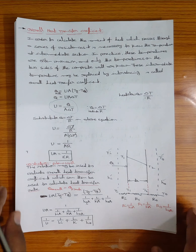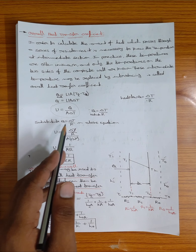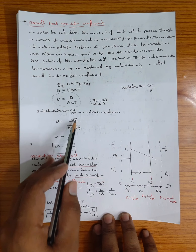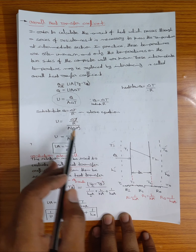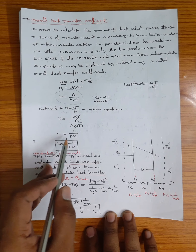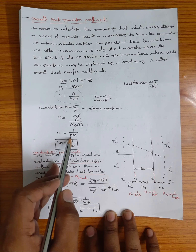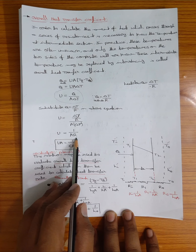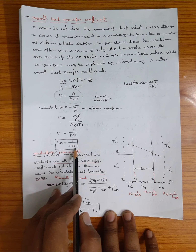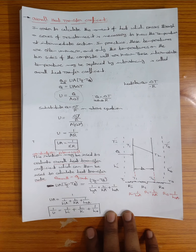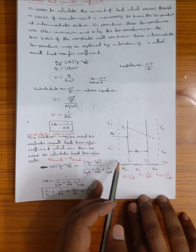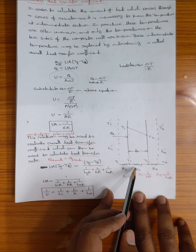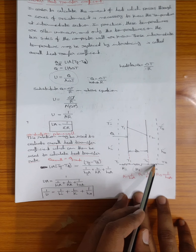Substituting Q = ΔT / R into U = Q / (A × ΔT), the ΔT terms cancel and we get U = 1 / (A × R). Therefore UA = 1 / R, where R is the total thermal resistance including all convection and conduction terms.